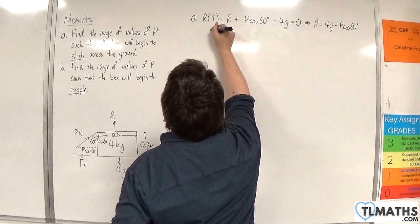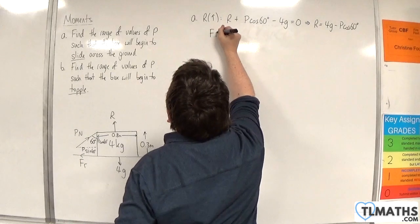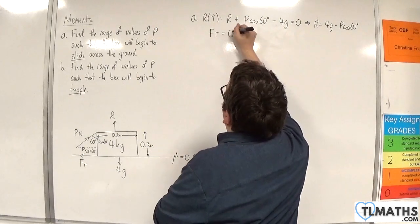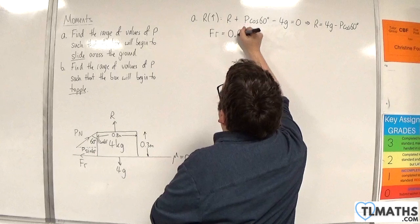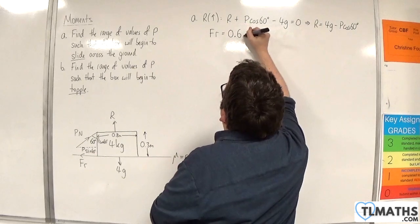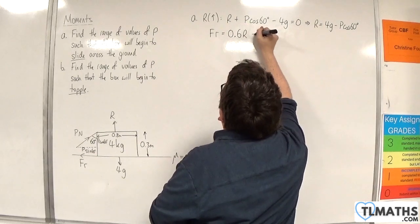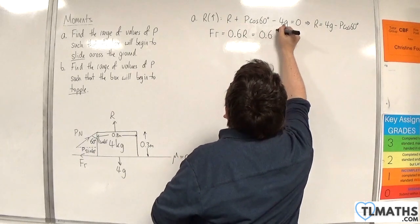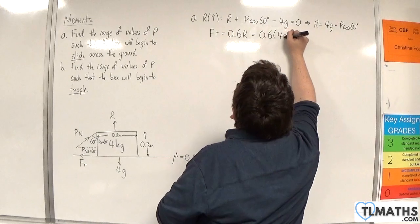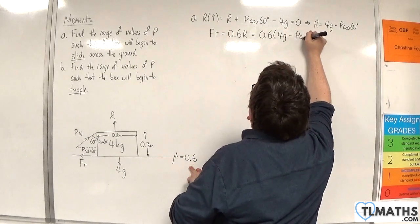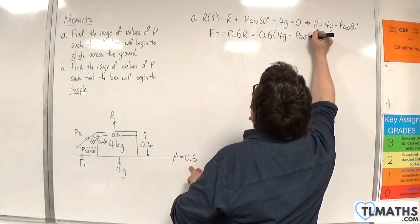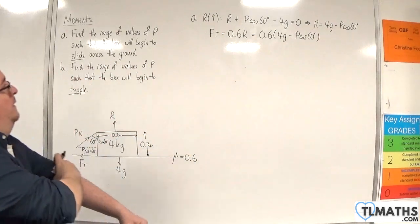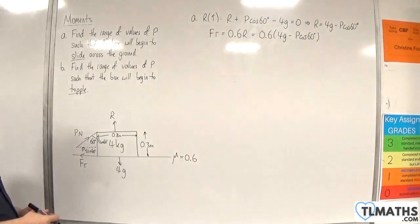We know that friction must be equal to mu times R, so 0.6 times R, which is equal to 0.6 times (4g take away P cosine 60). So that's the friction force.